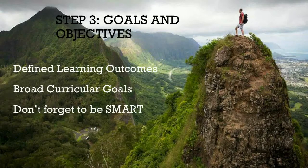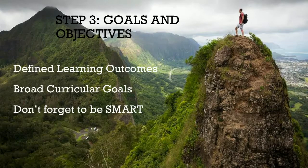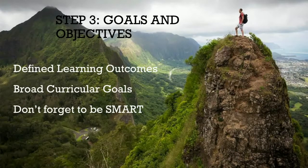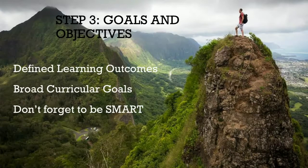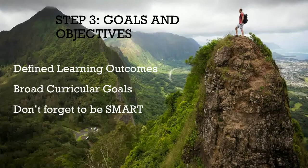Step three is our goals and objectives. This is where those SMART objectives really come into play — helping you define what exact learning outcomes you want your learners to have. You want this to be representative of your broad curricular goals, but SMART objectives help make it more measurable and more definable, so that you can better develop your educational strategies and measure the success or failure of your curriculum.